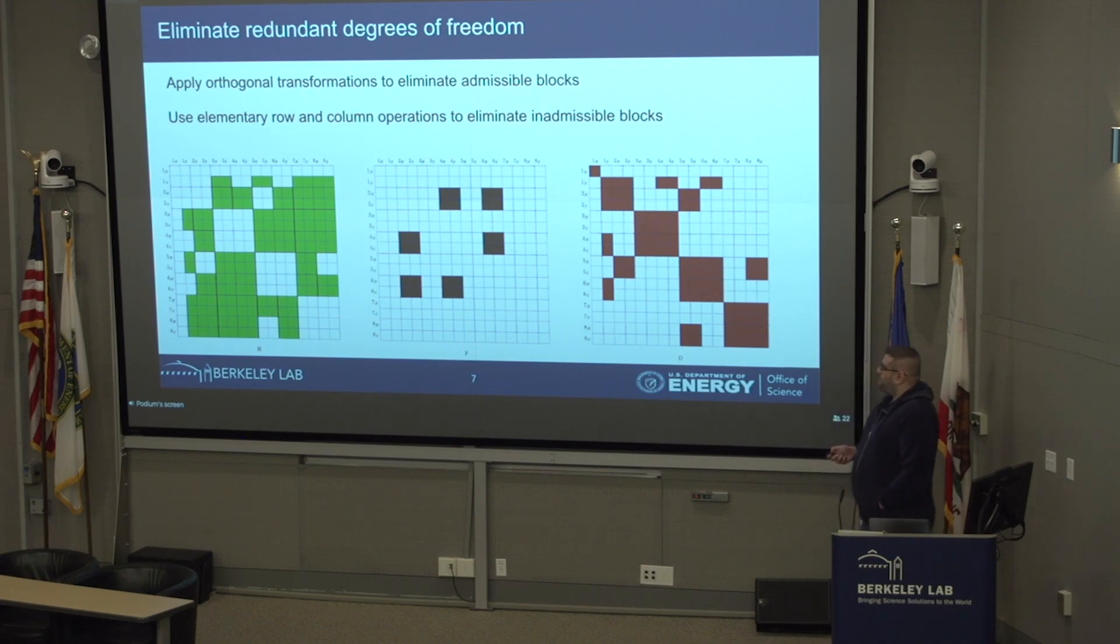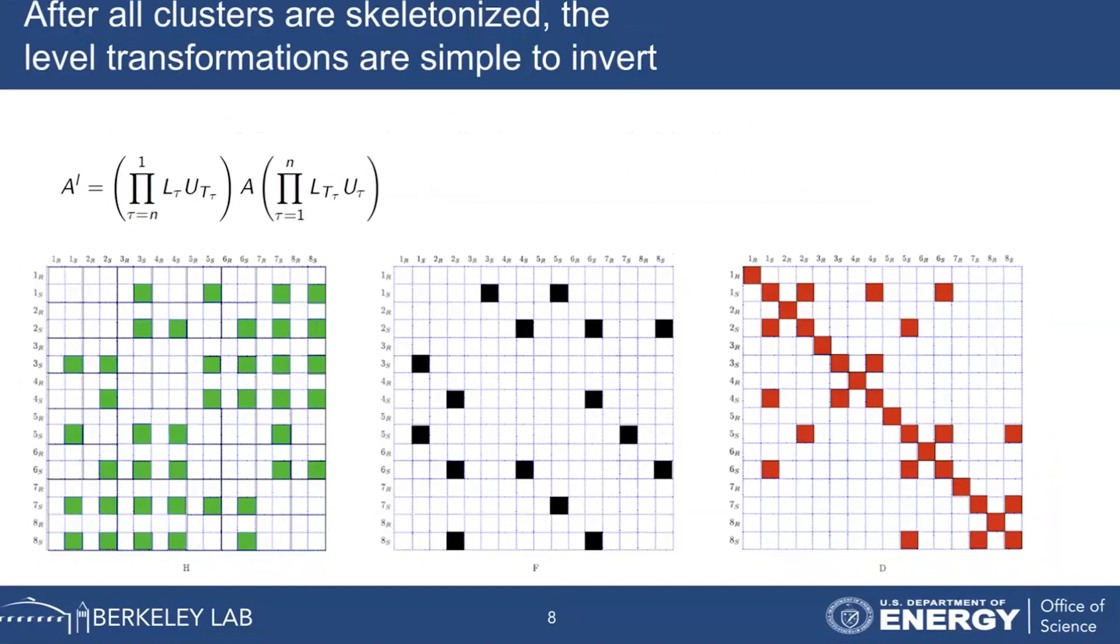We do that for all of the clusters, and in the end we end up with a skeletonized matrix. All the redundant portion of the matrix has been zeroed out in the admissible parts, and the inadmissible part, with the only remaining parts being the block diagonals. All of those transformations can be easily inverted. We had orthogonal transformations and row and column operations which can be easily inverted, so that when we get to the solved part, then that can be easily computed.